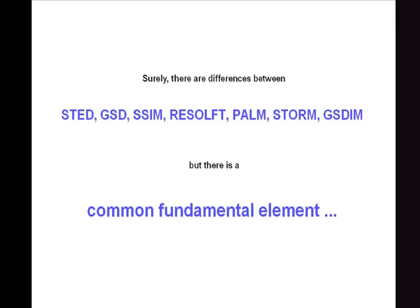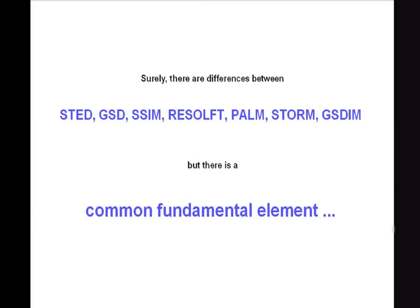To sum up: we see now many acronyms standing for different ways of getting high spatial resolution, and there are differences between them. But if you're trained as a physicist you're interested in knowing what the common fundamental element is that allows us to overcome the diffraction barrier. What is the reason why we can take these pictures now, but 15 years back we couldn't? Something must have been introduced into the game in order to take these images.